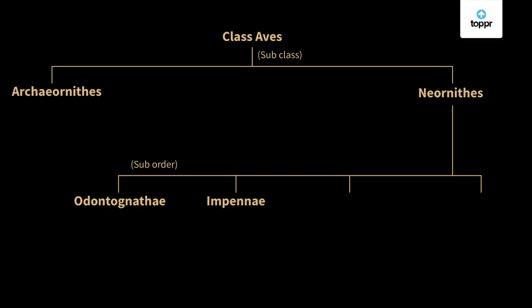The third super order is Palaeognathae, which includes large and massive birds that are flightless in nature. Their sternum is raft-like and lacks a keel. The oil glands or preen glands are also absent in them. The most common example is Struthio — the African ostrich — which is the largest living bird of the modern period.